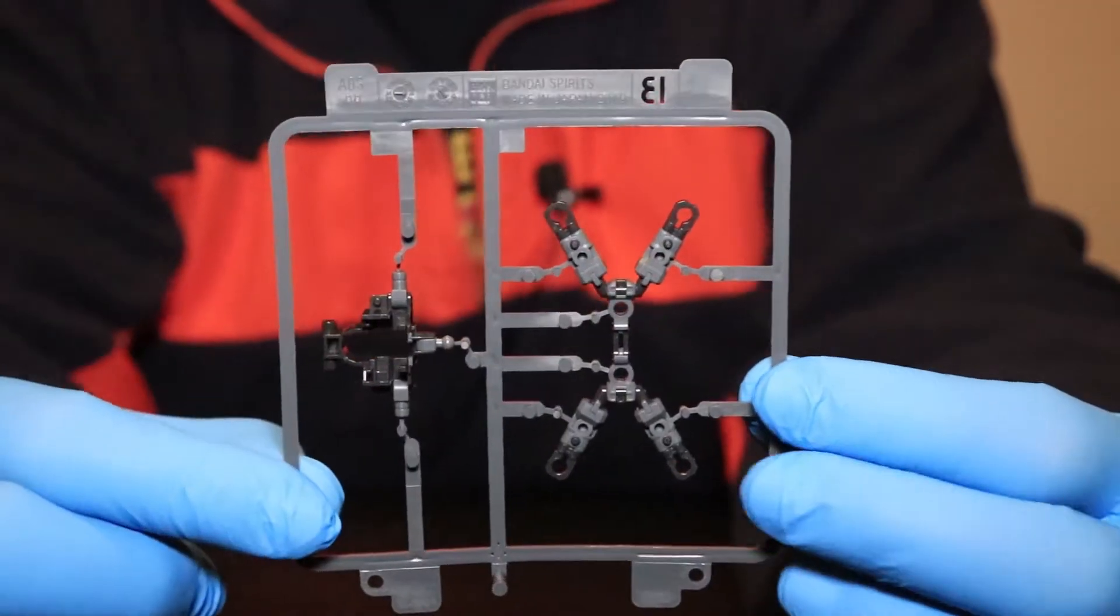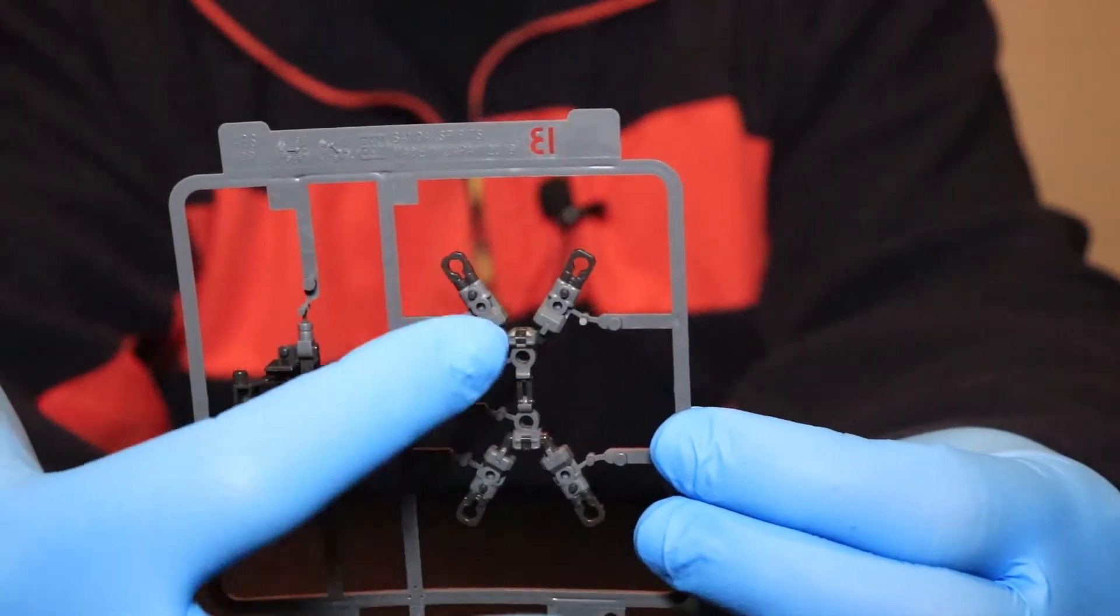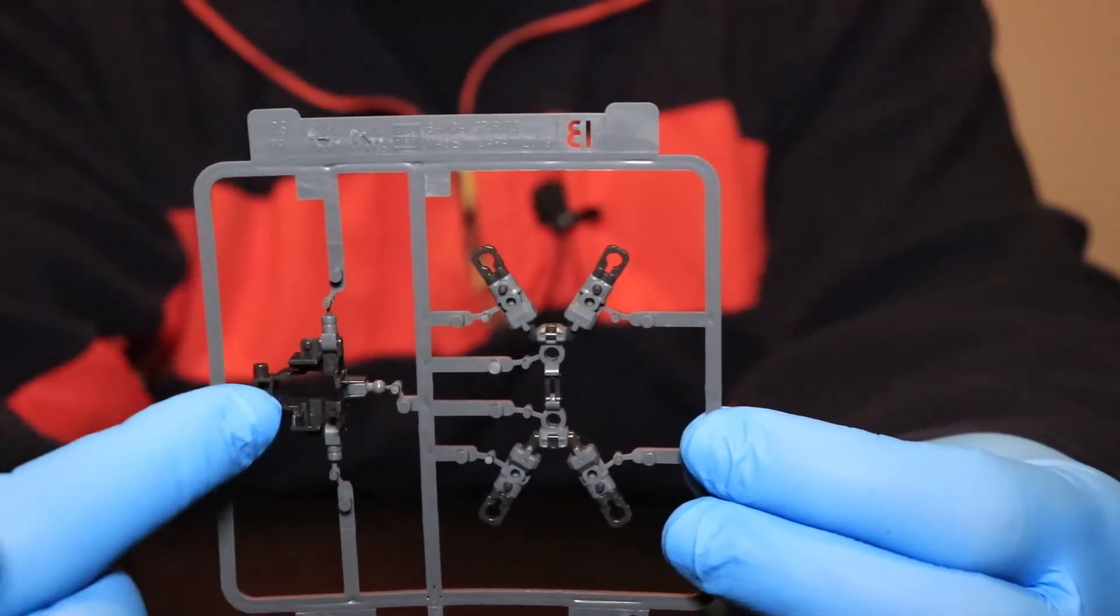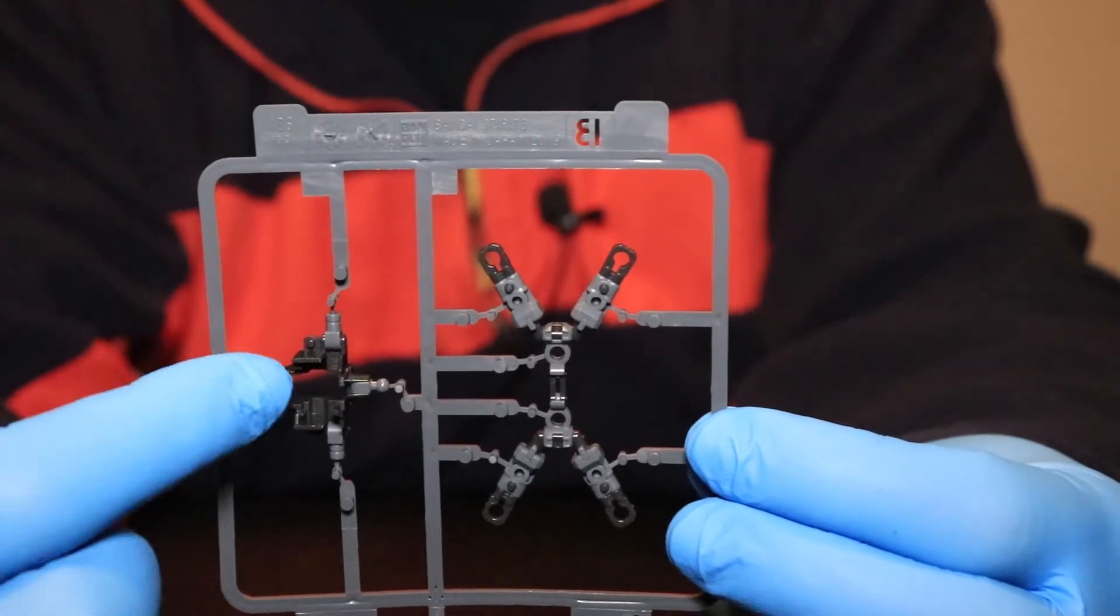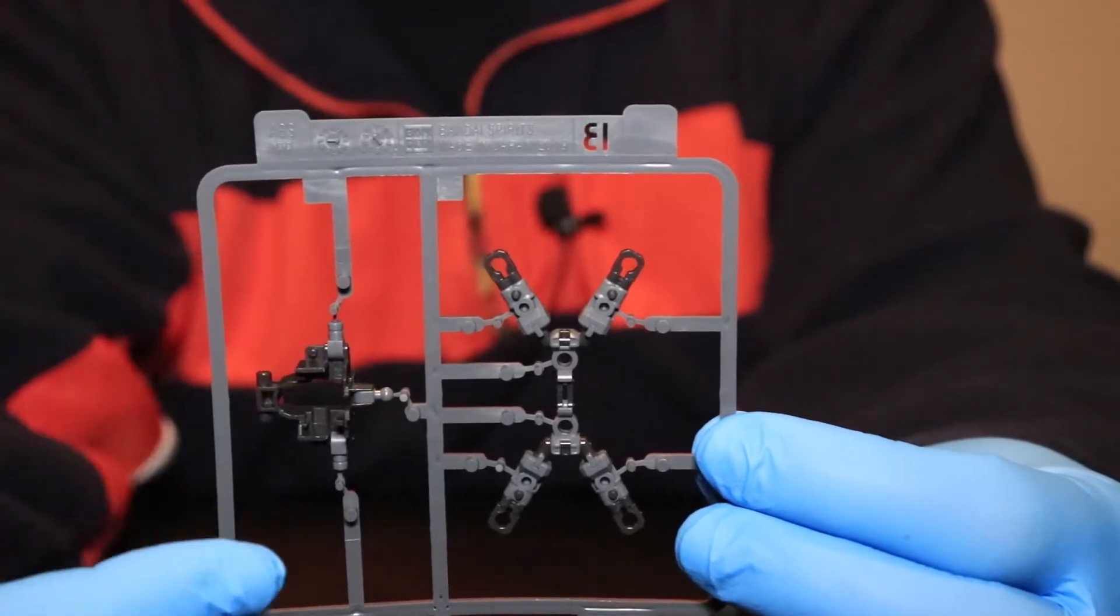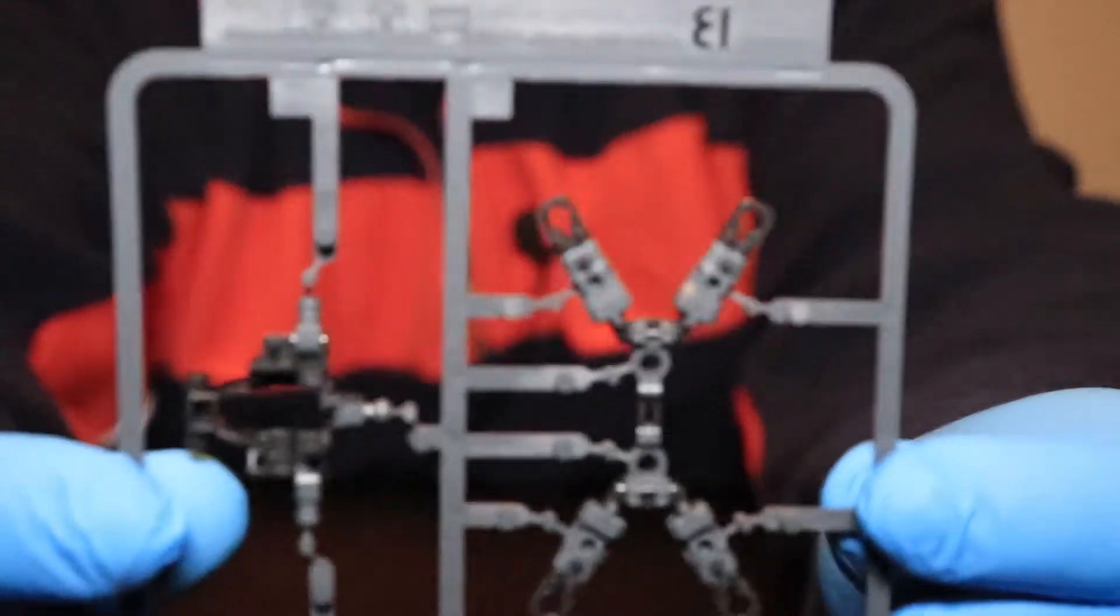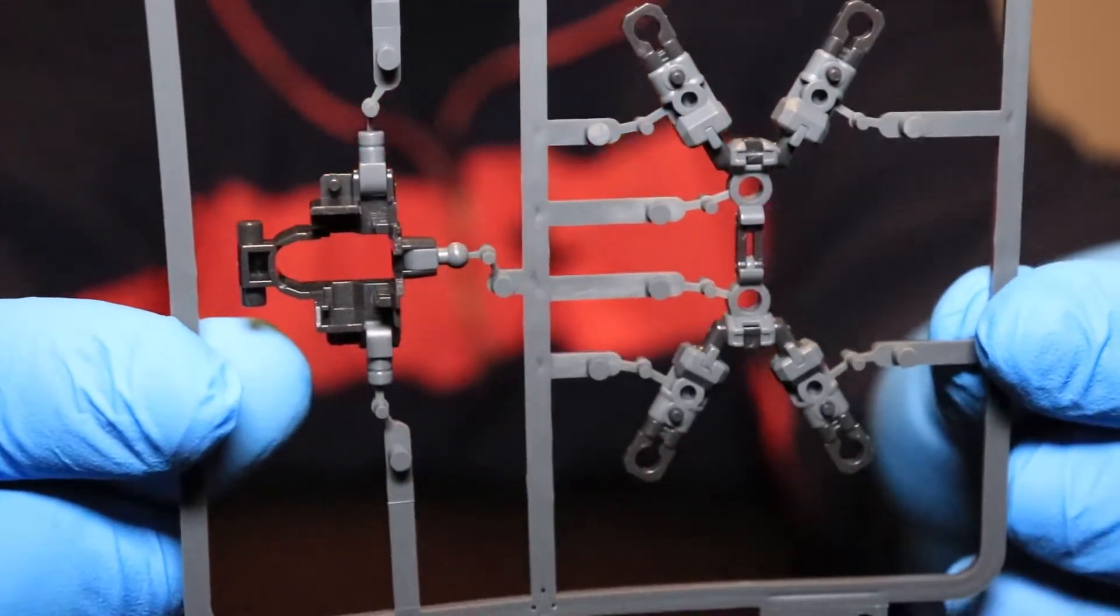Got the B plate right here. These hold where the thrusters will be at, and this I believe is part of the torso where the core fighter goes in. So there you go.